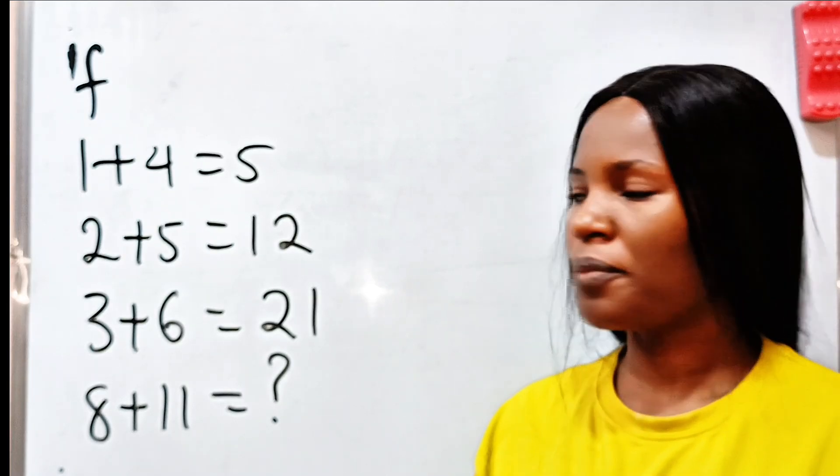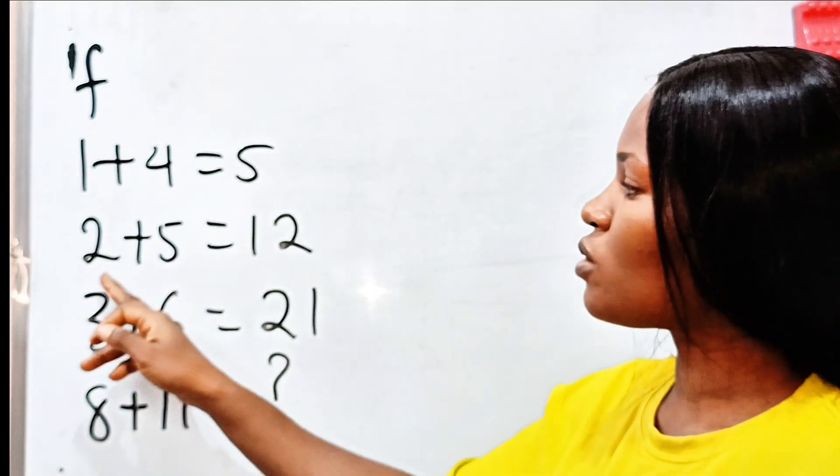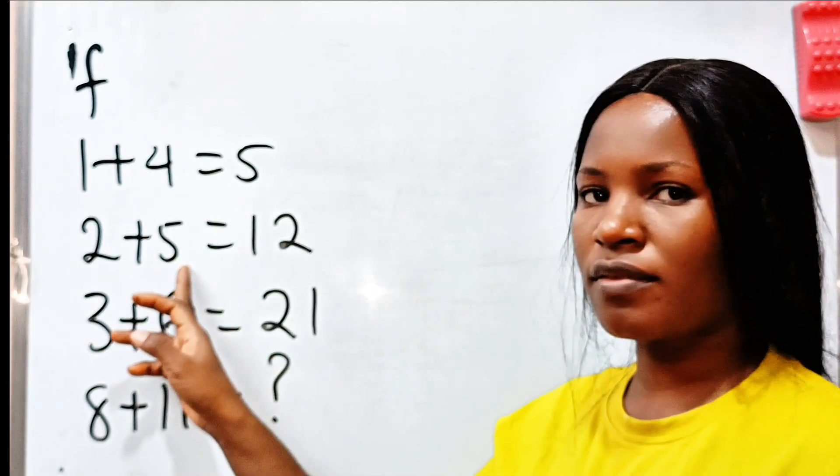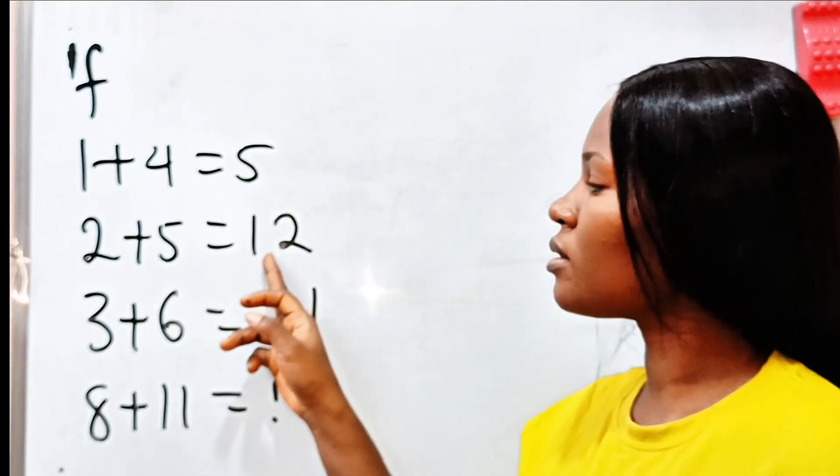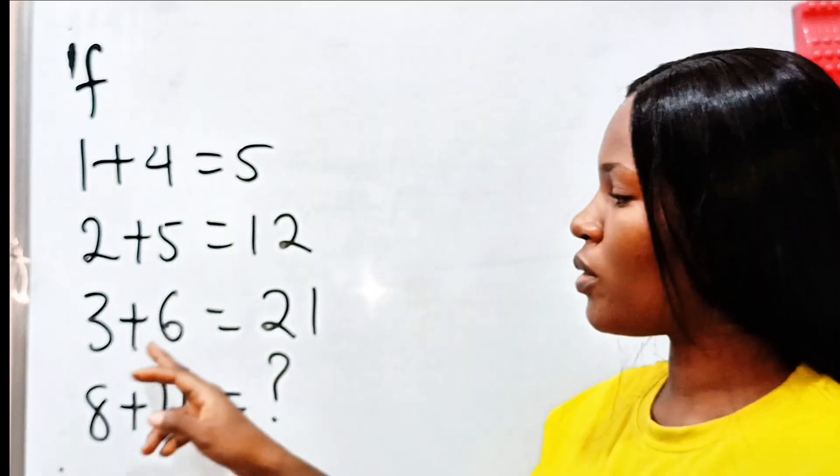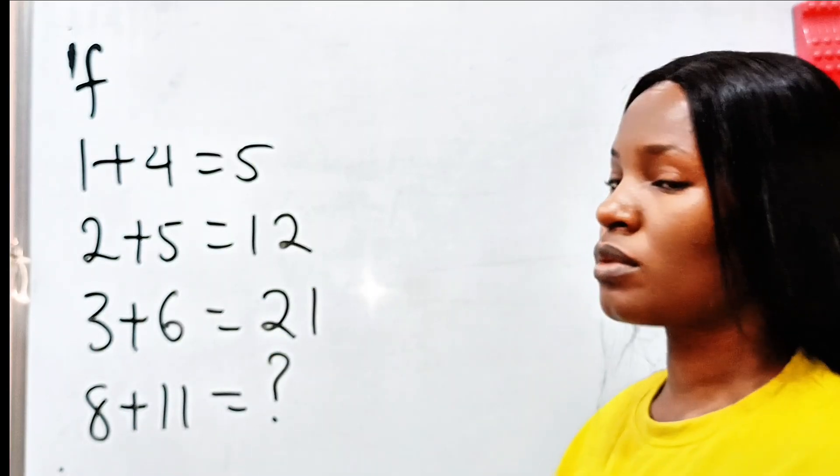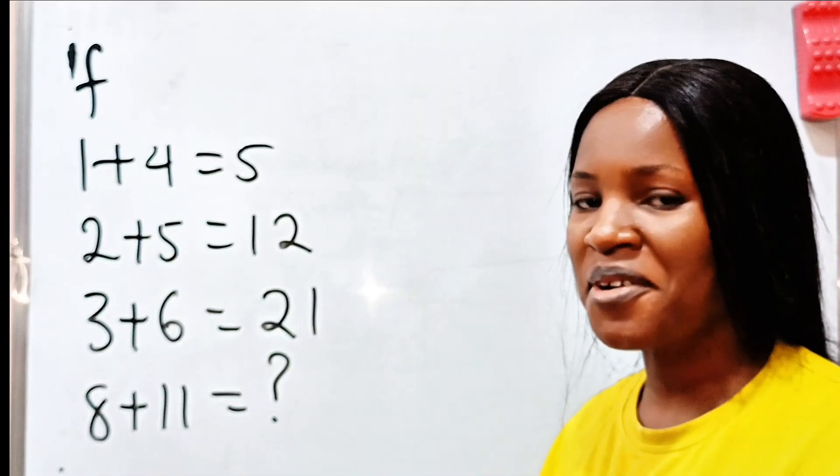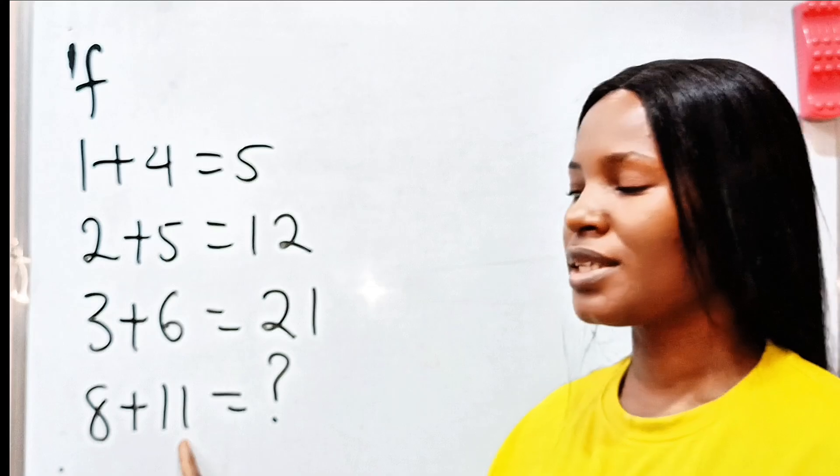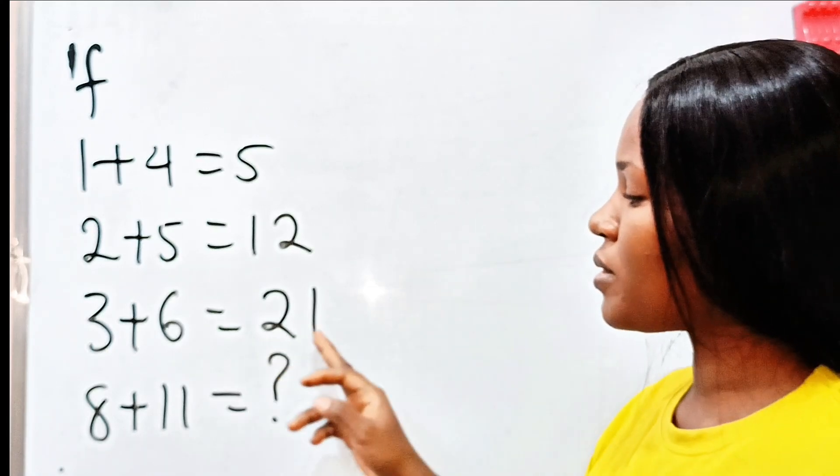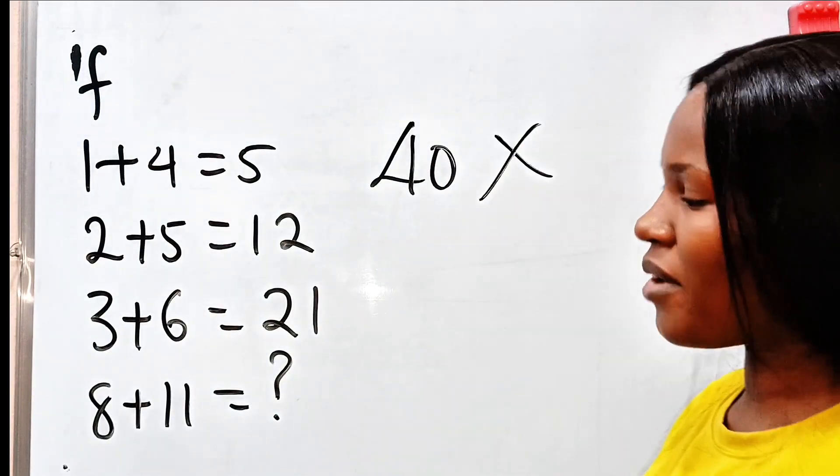Now some people will do it this way. So we say 1 plus 4 is equal to 5. Now 2 plus 5 is 7 and 7 plus this 5 is 12 which is correct. 3 plus 6 is 9, 9 plus 12 is 21. Wow, that's also correct. Then they will say 8 plus 11 is 19 and 19 plus 21 is 40. If that is your answer then you are wrong.